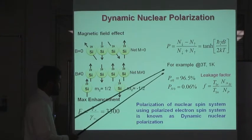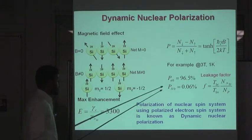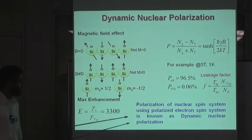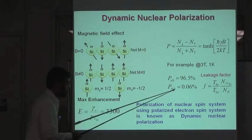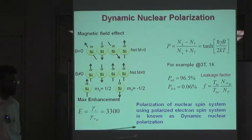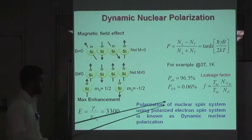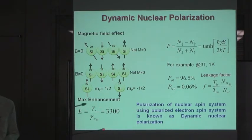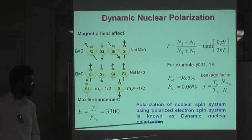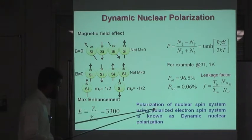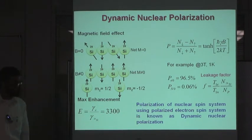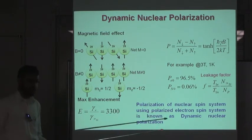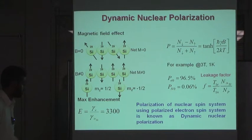At 3 K and 1 Tesla, the thermal equilibrium value of electron spin is 96.5%, while the thermal equilibrium of nuclear spin is 0.06%, which is quite low. So if somehow we can use the highly polarized electron spin to polarize the nuclear spin system, that process is called dynamic nuclear polarization.